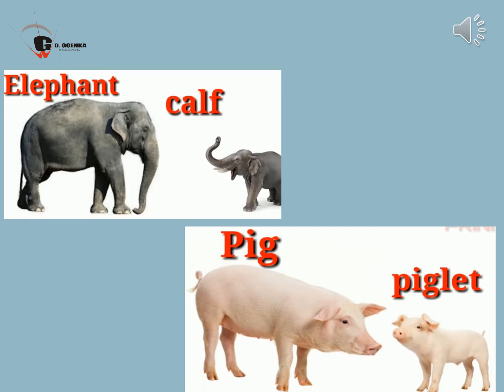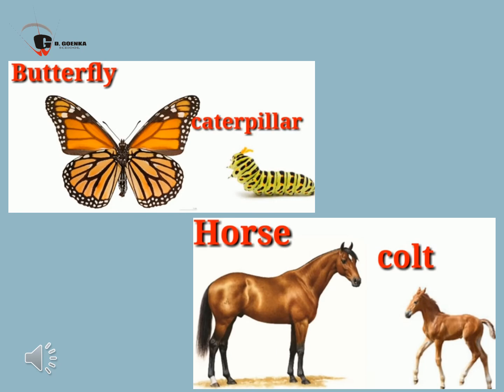Pig — Piglet. The baby of a pig is piglet. Next animal is horse — Colt. Baby of a horse is colt. Horse is used by humans to carry load and for travelling. There are about 300 species of horse in the world.